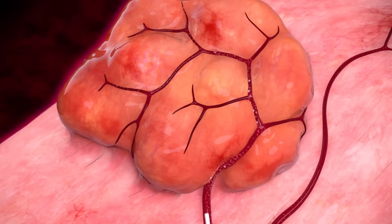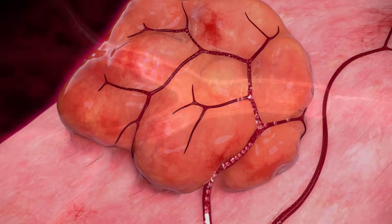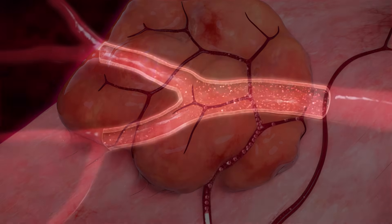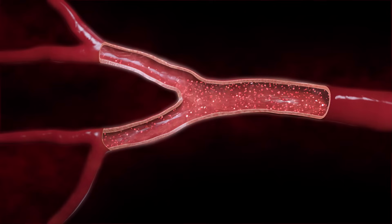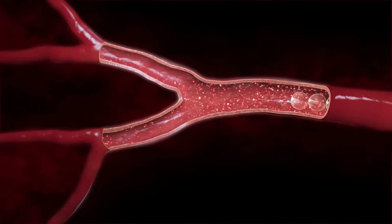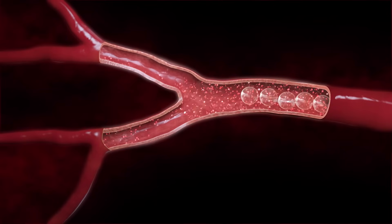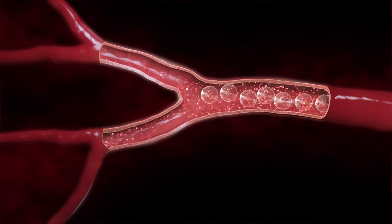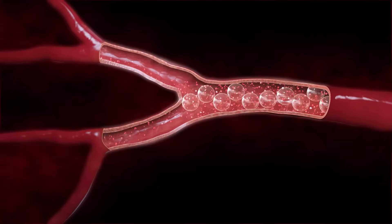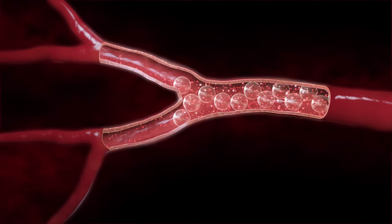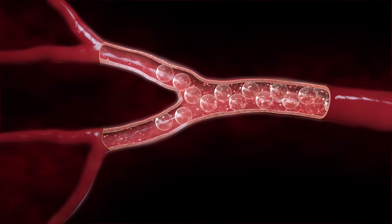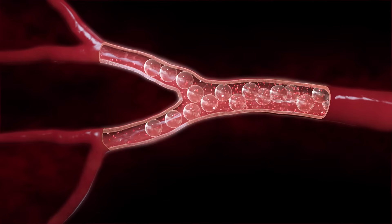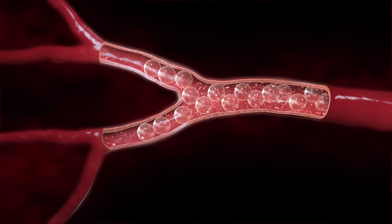The tiny microspheres are injected through the catheter and travel through the blood vessel. Since the microspheres are more than 60 times larger than red blood cells, they plug the tiny vessels that red blood cells travel through to feed the fibroid.